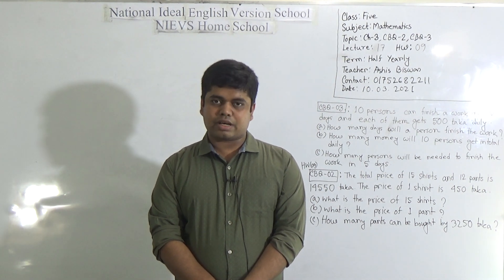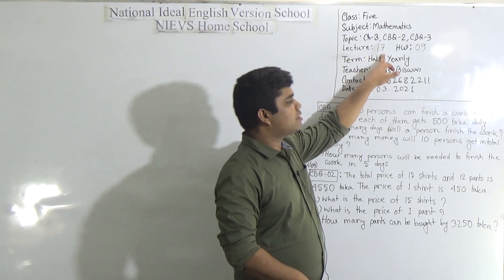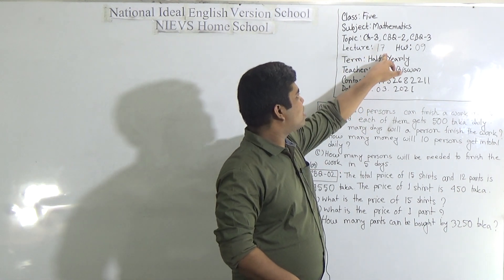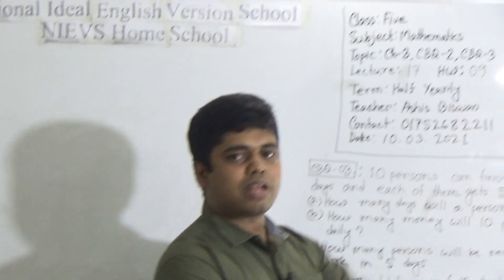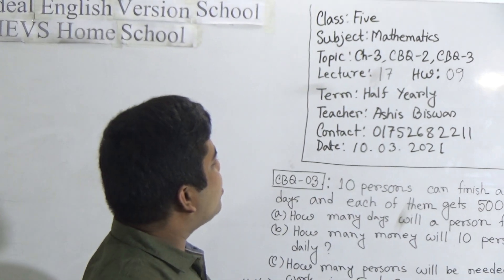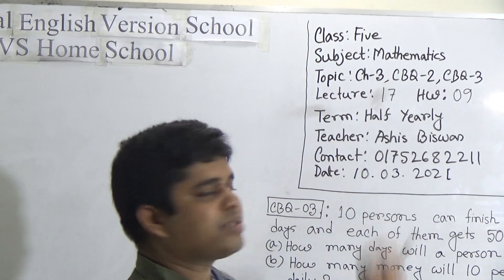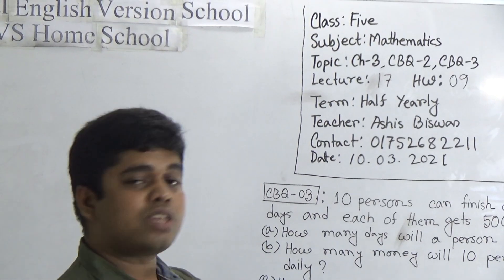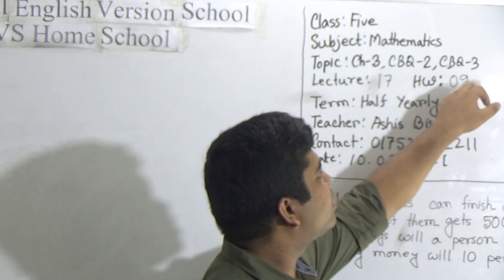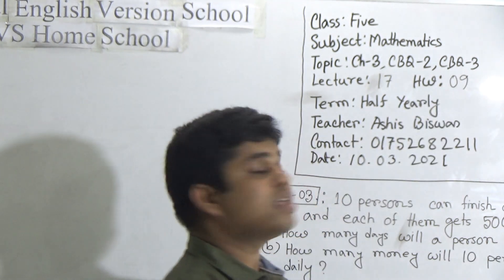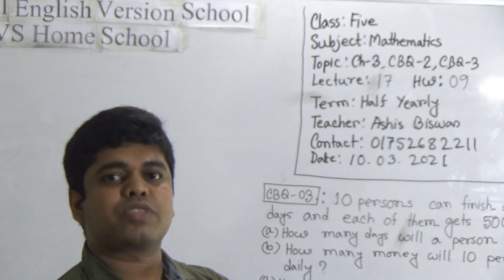My dear students, let us start our class. Today's lecture number is 7.17 and today's HW number will be 9. Our today's topic is Chapter 3. From Chapter 3, we shall solve two CBQs — CBQ number 2 and CBQ number 3. One CBQ will be solved in our class and another will be your SW.